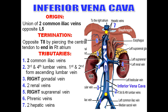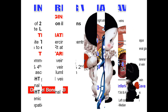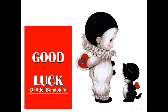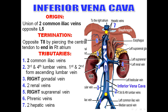Remember: the left testicular (or left ovarian) and the left suprarenal veins both terminate in the left renal vein — so the left renal vein receives two veins: left testicular or left ovarian, and left suprarenal vein. Also, the median sacral vein terminates in the left common iliac vein.